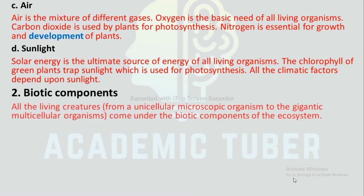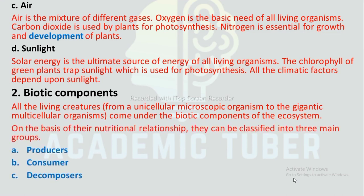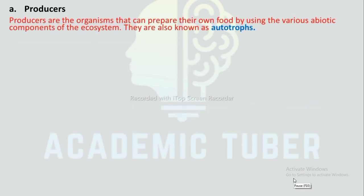Biotic components: All living creatures, from unicellular microscopic organisms to gigantic multicellular organisms, come under the biotic components of the ecosystem. On the basis of their nutritional relationship, they can be classified into three main groups: producers, consumers, and decomposers. Producers are the organisms that can prepare their own food by using the various abiotic components of the ecosystem; they are also known as autotrophs.